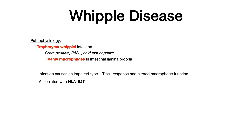Lastly, Whipple disease. Pathophysiology: Whipple disease is due to infection with the gram-positive bacterium Tropheryma whipplei. This is a gram-positive, PAS-positive, acid-fast-negative infection that causes foamy macrophages in the intestinal lamina propria. Foamy macrophages is the buzzword — if you see foamy macrophages, select Whipple disease. This infection causes impaired type 1 T-cell responses and alters macrophage function. It is highly associated with HLA-B27.